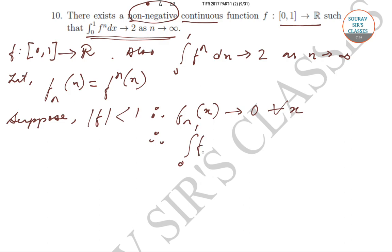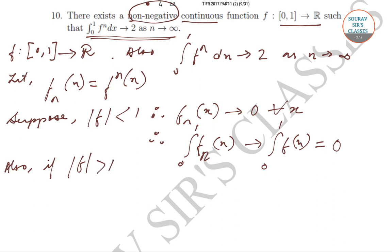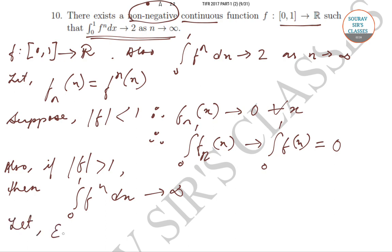Therefore, the integration from 0 to 1 of f^n(x) tends to the integration from 0 to 1 of f(x), which is equal to 0. Also, if |f^n(x)| is less than 1 in some region, then the integration from 0 to 1 of f^n dx tends to 0. Now let us introduce the term epsilon, which will be the measure of the set A of x.